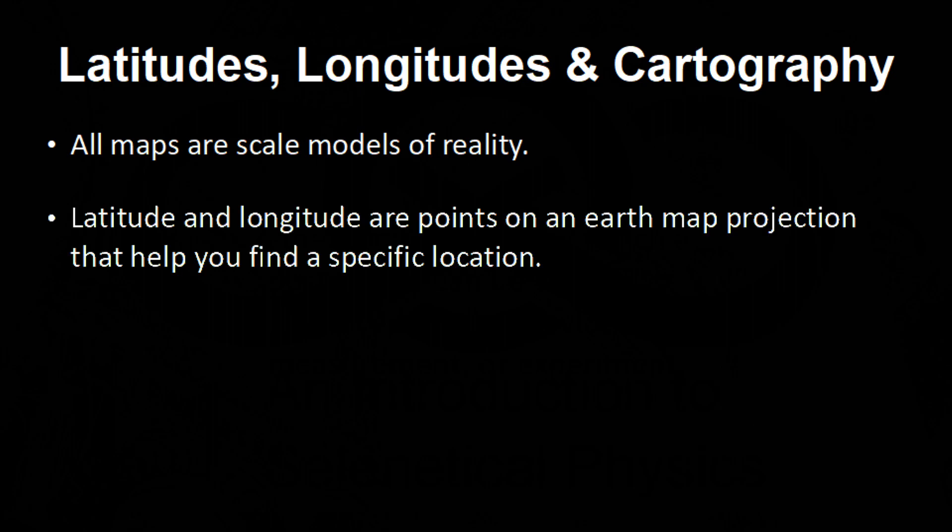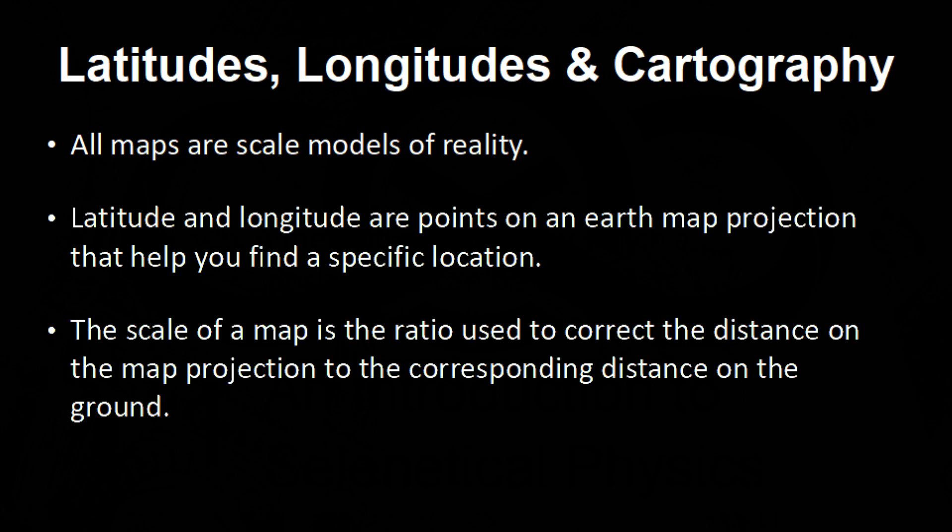Core Axioms: All maps are scale models of reality. Latitude and longitude are points on an earth map projection that help you find a specific location. The scale of a map is the ratio used to correct the distance on the map projection to the corresponding distance on the ground.